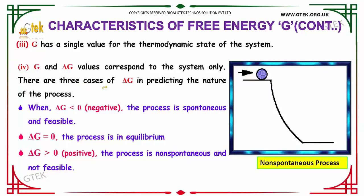The three cases of delta G which I defined before: delta G less than 0 is spontaneous, equal to 0 is equilibrium, and greater than 0 is non-spontaneous and not feasible.